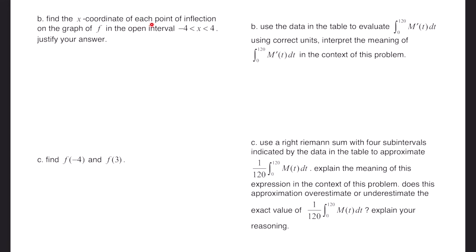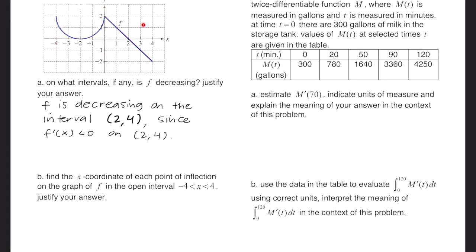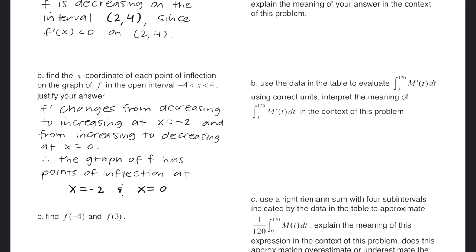Part b asks for the x-coordinates of each point of inflection on the graph of f in the open interval from negative 4 to 4. A point of inflection occurs where f changes from concave up to concave down or vice versa. Since we have the graph of f prime, a point of inflection on f occurs where f prime changes from increasing to decreasing or vice versa. f prime changes from decreasing to increasing at x equals negative 2, and from increasing to decreasing at x equals 0. Therefore, the graph of f has points of inflection at x equals negative 2 and x equals 0.